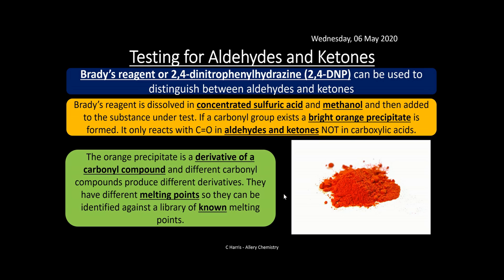The bright orange substance formed is a derivative of the carbonyl compound. Different carbonyl compounds produce different derivatives with different melting points, and these can be identified against a library of known melting points. You can put the derivative into a melting point apparatus and identify what type of aldehyde or ketone you have based on the measured melting point.